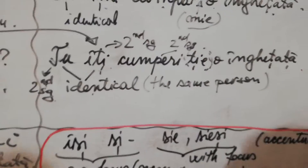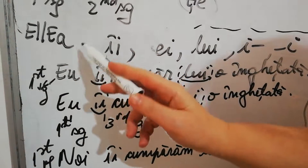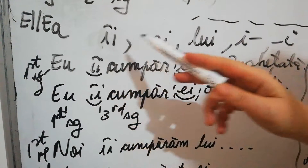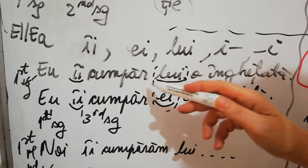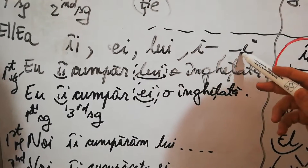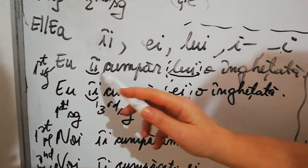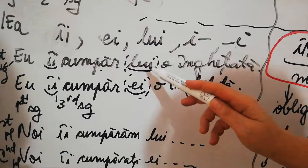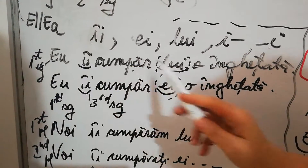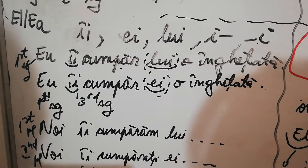Now we go to the third person singular. Third person singular means 'el' or 'ea' - he or she. The personal pronoun is 'îi', 'ei', 'lui', 'i'. For example: 'Eu îi cumpăr lui o înghețată' - I buy him an ice cream. 'Eu îi cumpăr ei o înghețată' - I buy her an ice cream. To whom? To him, to her.